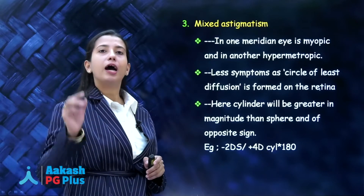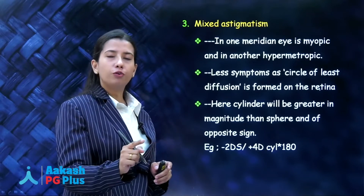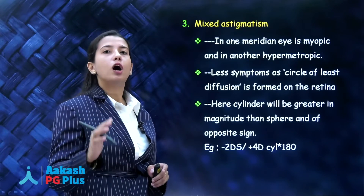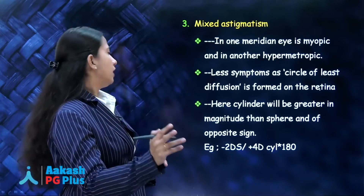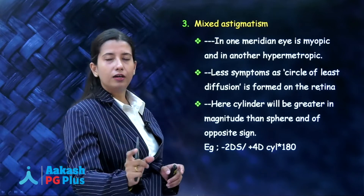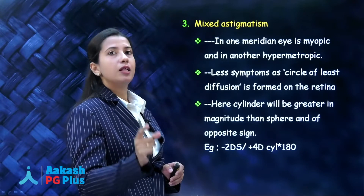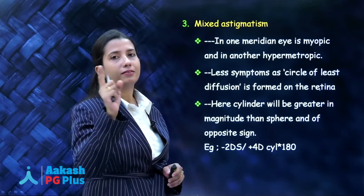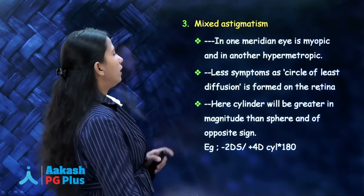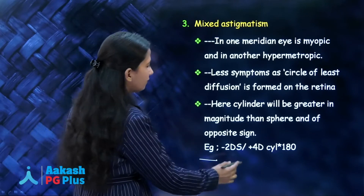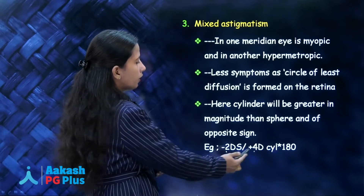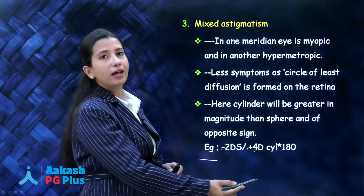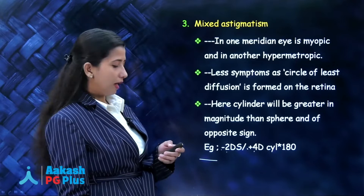In mixed astigmatism, one meridian is focusing in front of the retina and another behind the retina. To identify it from a prescription, look at the sphere and cylinder: in mixed astigmatism, the magnitude of the cylinder will be greater than that of the sphere and the signs will be opposite. For example, if cylinder is minus 4 and sphere is plus 2, the cylinder is greater in magnitude and the signs are opposite — that is mixed astigmatism.